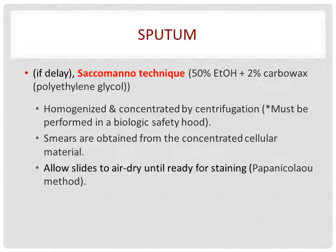For sputum, in case it is delayed and you cannot process it directly, you can perform the Saphomanno technique. In this technique, the sputum is collected in 50% ethanol and 2% Carbowax, the polyethylene glycol. The specimen is then homogenized and concentrated by centrifugation methods. The Saphomanno method must be performed in a biologic safety hood due to the risk of infection from aerosol.